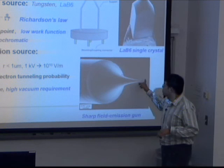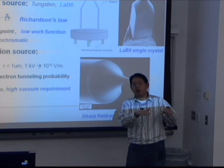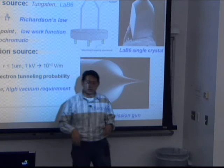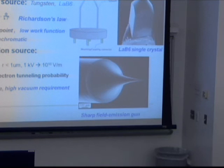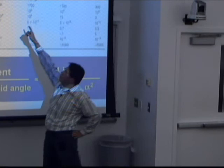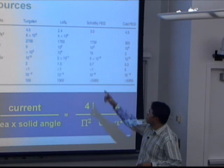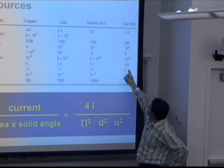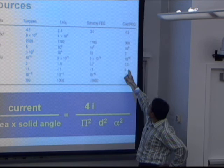Nowadays we are using more and more field emission sources. We don't want to heat up the source because heating generates thermal fluctuations that reduce the monochromaticity of the source. So we use cold field emission sources. The work function for LaB₆ is 2.4 eV, while for tungsten it is 4.5 eV. Because of the exponential dependence, this improves current density a lot. However, cold field emission requires a very high-purity, ultra-high vacuum system, which means expensive setup costs.